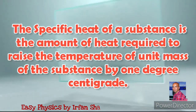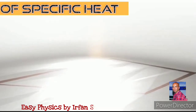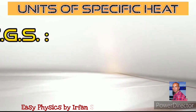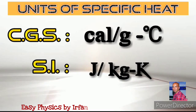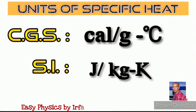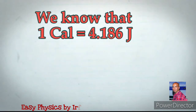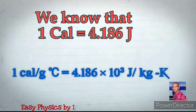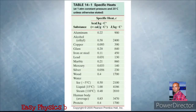Now let us know the units of specific heat. In the CGS system the units are calories per gram degree centigrade. In the SI system the units are joules per kg kelvin. We know that one calorie is equal to 4.186 joules. By this we can write one calorie per gram degree centigrade is equal to 4.186 × 10³ joules per kg kelvin.